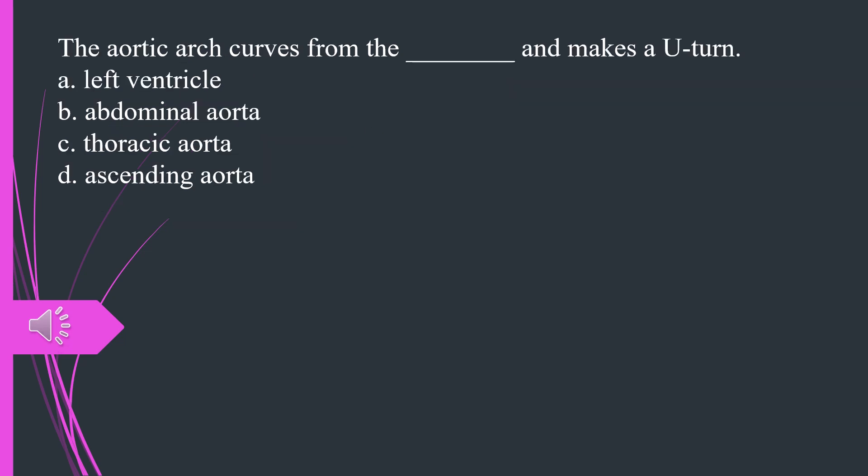The aortic arch curves from the what and makes a U-turn. A. Left ventricle B. Abdominal aorta C. Thoracic aorta D. Ascending aorta. The answer is D, ascending aorta.